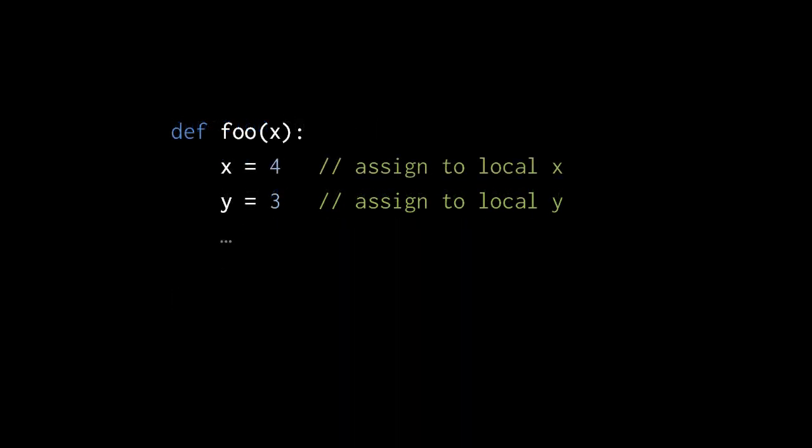In the Python version of this function, x is clearly a local variable because there is a local parameter x, but y is also a local variable just by virtue of the fact that we assign to y in this function. That raises the question: what if in the function you want to assign to a variable which is not part of the function? We have to do the inverse of what we do in JavaScript — in Python we have to explicitly declare that a variable is not local, and one way to do that is with the global statement.